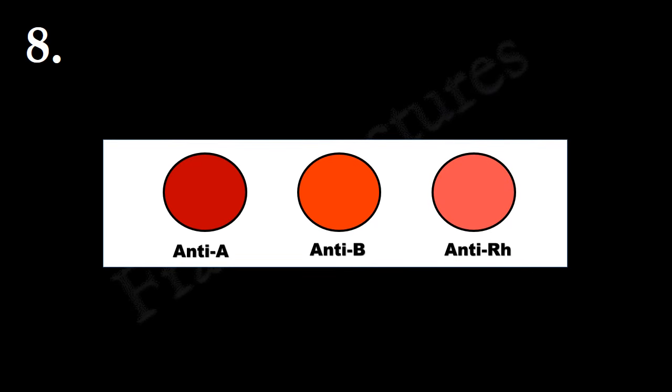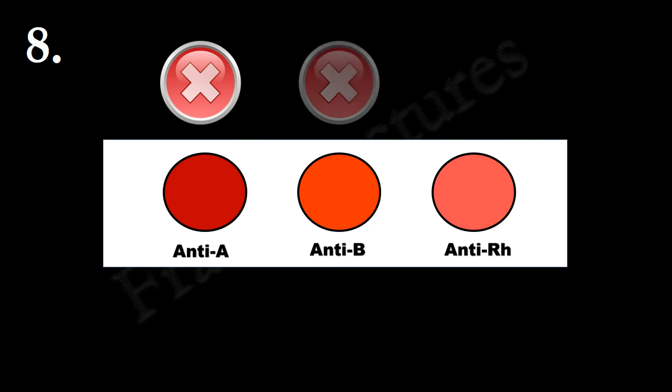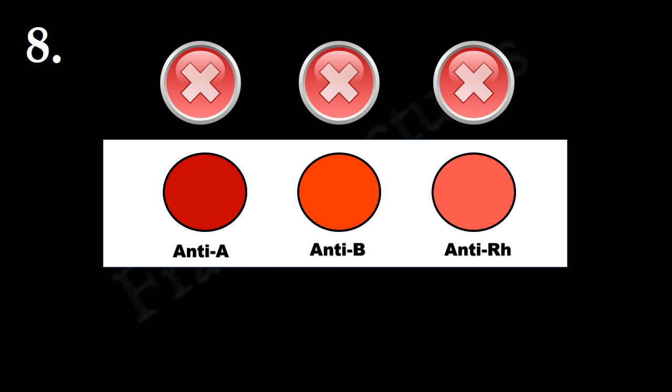Here, agglutination is absent in all the circles. This means all three antigens are absent on the RBCs. Therefore, blood group will be O negative.